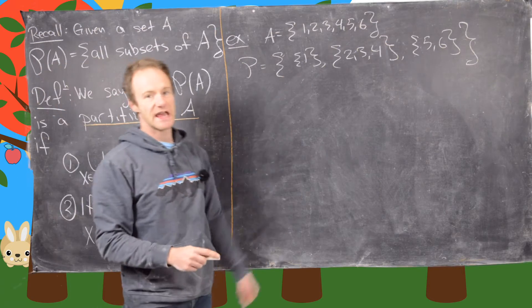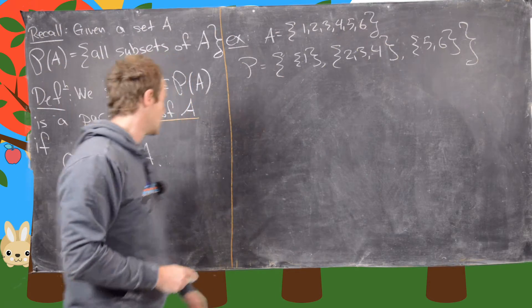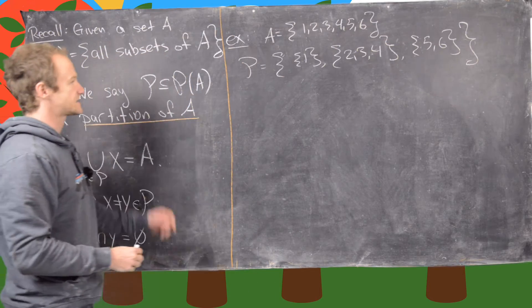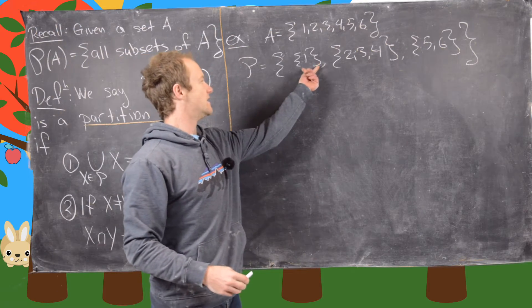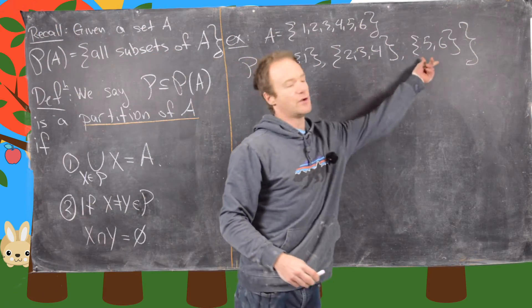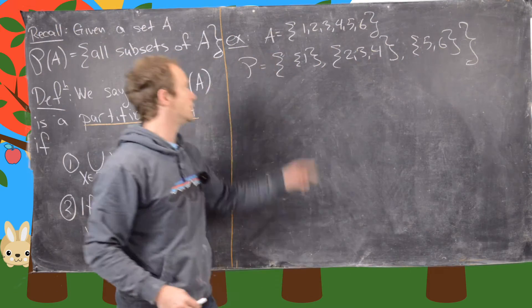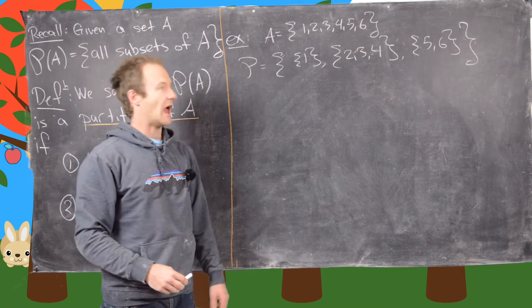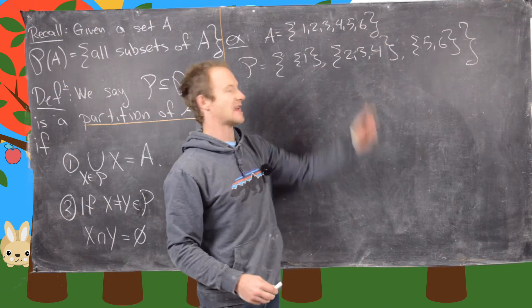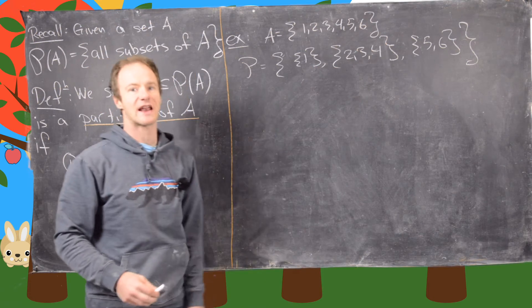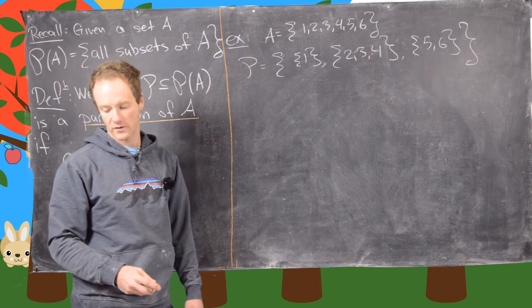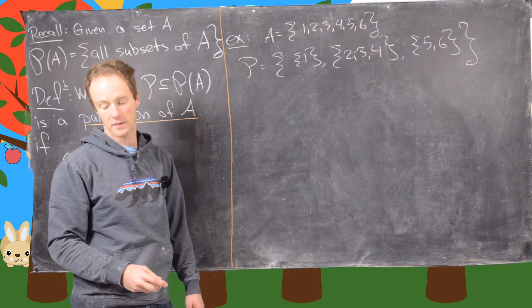Now notice, is this a partition? Yes, because if you take the union of these three subsets you get the whole set. And also, if you intersect any of these that are not equal, you get the empty set — so they don't overlap at all.